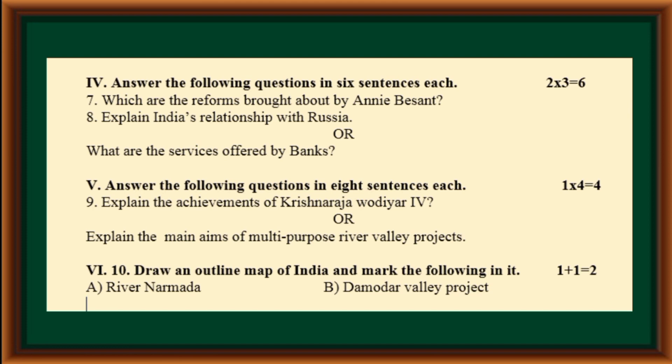Sixth main: Question number ten — draw an outline map of India and mark the following in it: River Narmada and Damodur Valley Project.